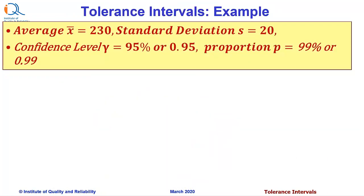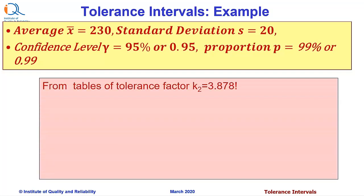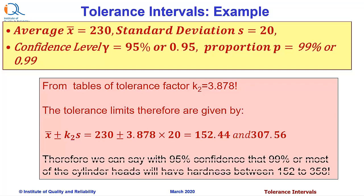In the application example, the sample average X̄ was 230 and sample standard deviation S was 20. The confidence level specified was 95% (0.95) and proportion P to be included was 99% (0.99). From the table, tolerance factor K2 was found to be 3.878. So the tolerance limits are calculated as X̄ ± K2·S = 230 ± 3.878 × 20, which works out to 152.44 and 307.56. Therefore, we can say with 95% confidence that 99% of the cylinder heads will have hardness between approximately 152 and 308 BHN.